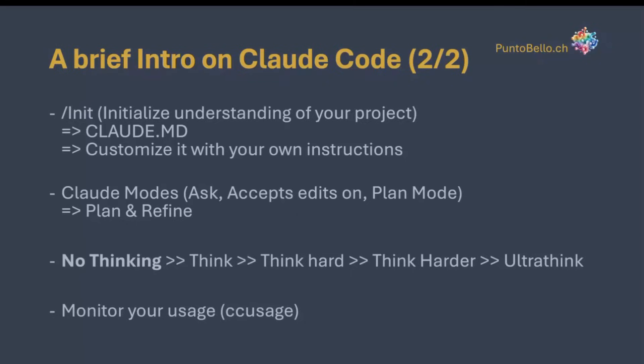It has three various modes. The first one asks for confirmation on every command it executes. The second one edits automatically but will ask you before running a build or doing a git operation. The third one, which I use a lot, is plan mode — you iterate, ask ClaudeCode to perform analysis, and refine your plan until you're ready to tell it to update the code. It also has five steps of reasoning; the first is basic reasoning with no extended thinking.